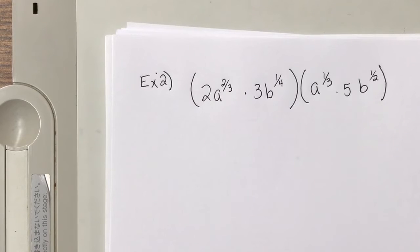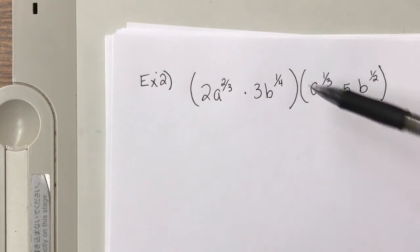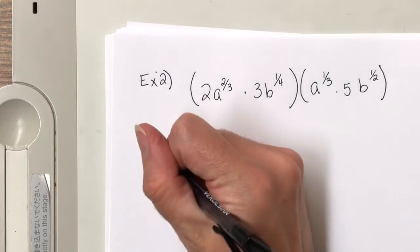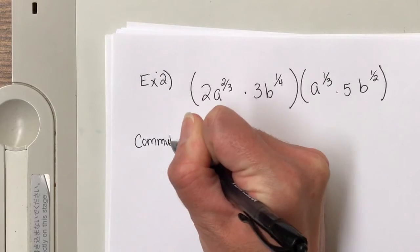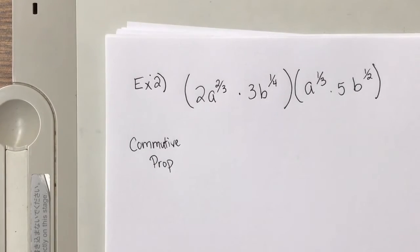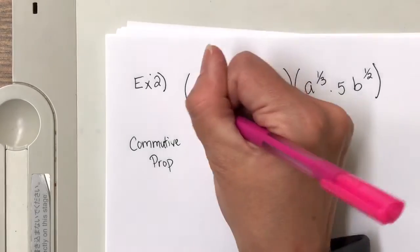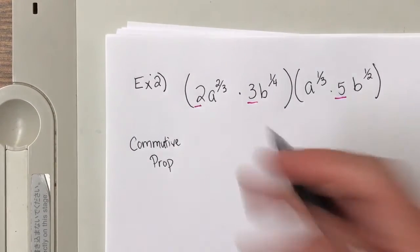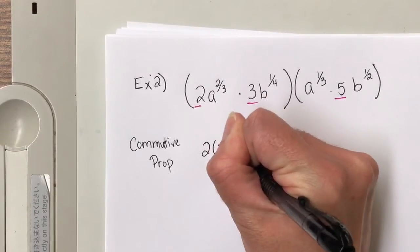So 2a to the two-thirds times 3b to the one-fourth, and then a to the one-third times 5b to the one-half. Before I start, I look and I think, what operations are going on? So yes, I have parentheses, which usually means distribute, but I don't have any other exponents outside of those parentheses. So the only operation I have going on here is multiplication. Since all I have is multiplication, I'm going to apply my product rule, which says same base, add the exponents. So the first thing I want to do is use the commutative property and rewrite this so that my bases are beside each other.